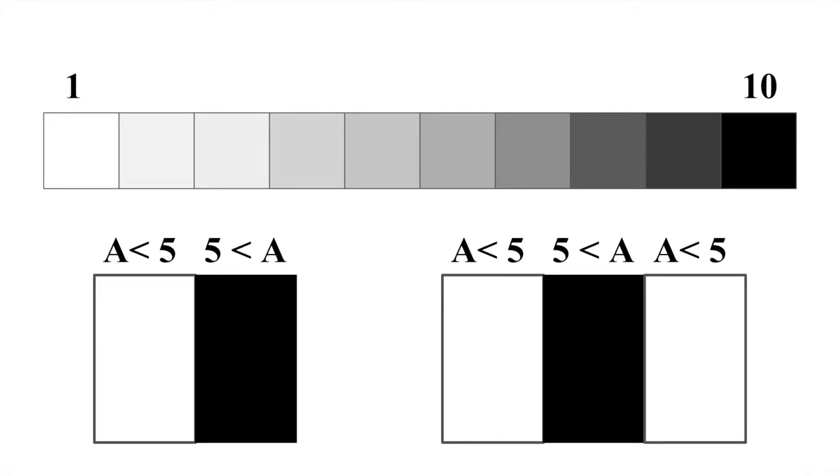For example, in edge-like features, the algorithm looks for one side dark and one side light. This is how it finds each feature of the face.